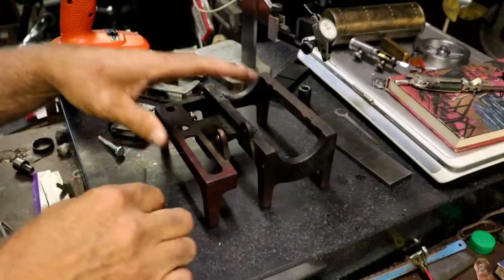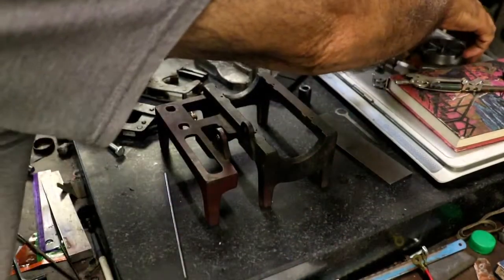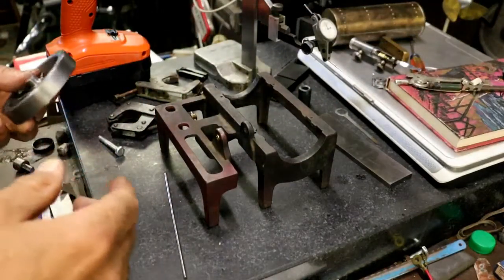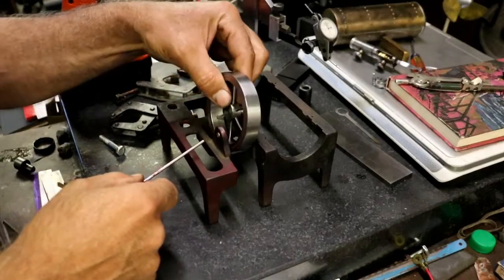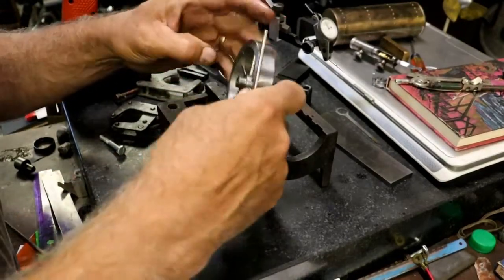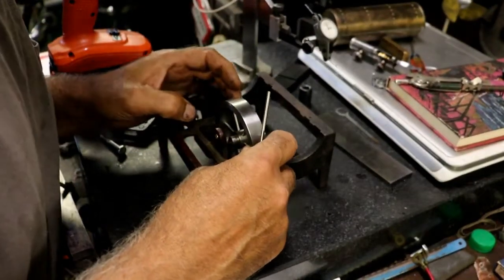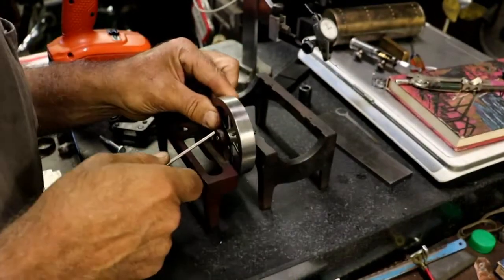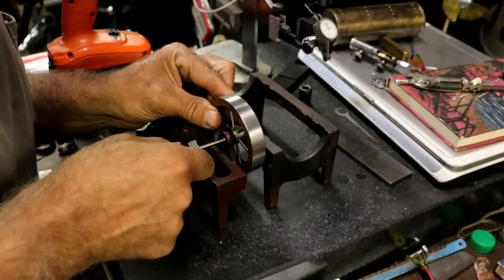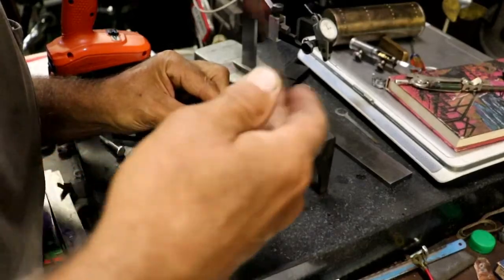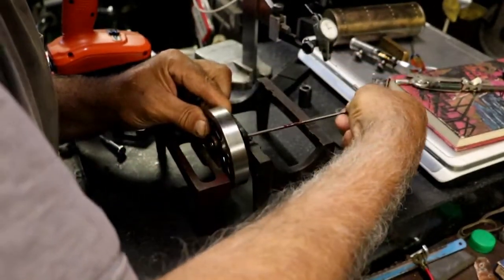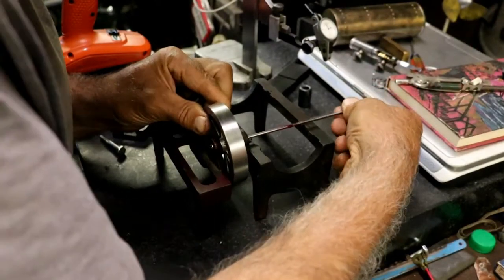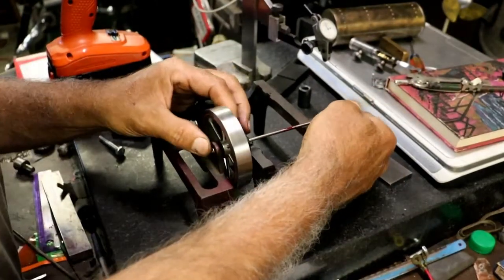Alright, so remember how all this goes together now. This has to come on this side. Nope, this way. I might have to make some washers. I should have actually made some washers to hold this in place.